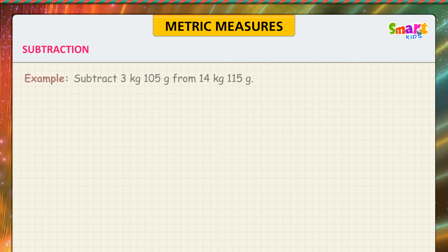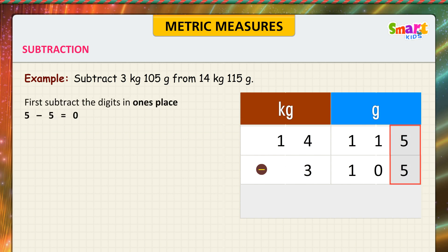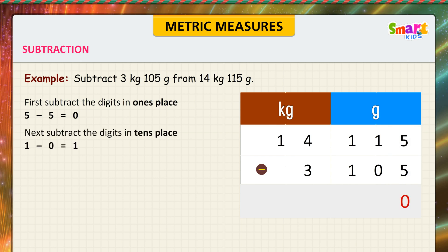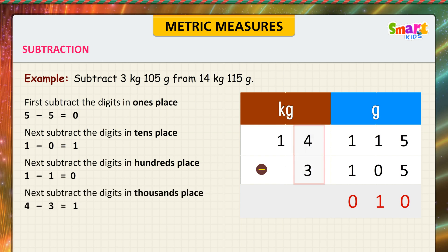Subtraction example: subtract 3 kilograms 105 grams from 14 kilograms 115 grams. Look at the problem. First, subtract the digits in the ones place: 5 minus 5 is equal to 0. Next, subtract the digit in the tens place: 1 minus 0 is equal to 1. Next, subtract the digit in the hundreds place: 1 minus 1 is equal to 0.